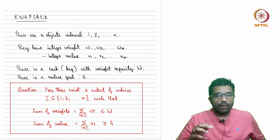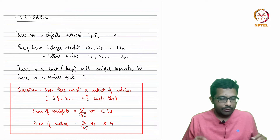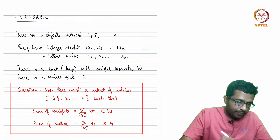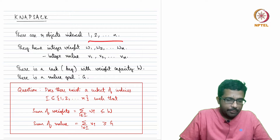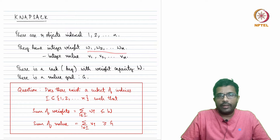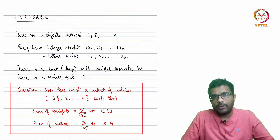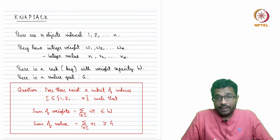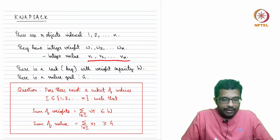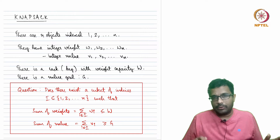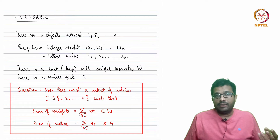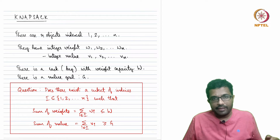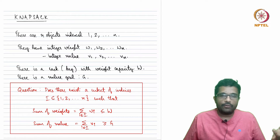There are n objects, indexed 1, 2, 3 up to n. Each object has a weight w1 to wn — so the first object has weight w1, the second has weight w2, and so on. Each object also has a value v1, v2, up to vn. Something like gold will be very valuable for a small weight, but something like iron would not be so valuable for the same weight.